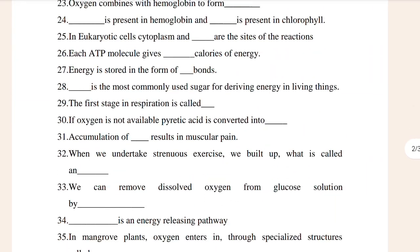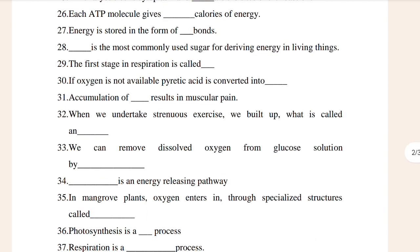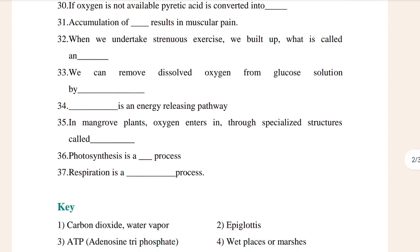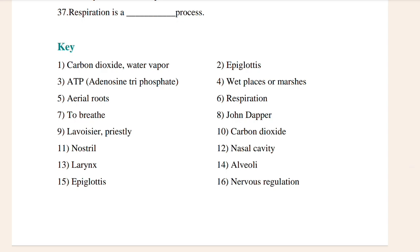Then you can see 23 to 32. Then you can go to questions up to 37. Here are the key concepts: carbon dioxide, water vapor, plastid, ATP, and tonic — three parts and some weight, plus sponsors, aerobic roads, respiration to breathe.